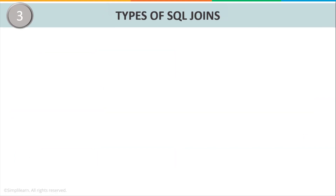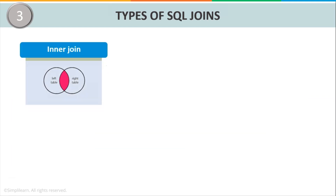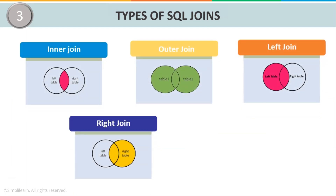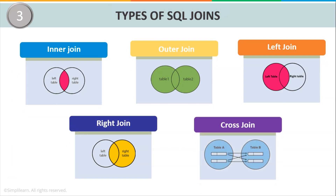Types of SQL Joins. SQL Joins are broadly classified into four types: Inner Join, Outer Join, Left Join, and Right Join. Additionally, we also have Cross Join, which is not that significant in usage because most of the time we use the first four joins. Now that we have gone through the different types of SQL Joins, let us discuss each of them in detail.